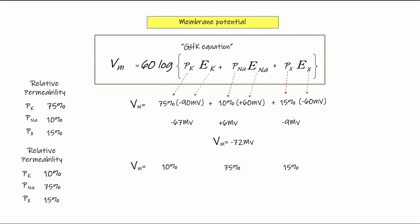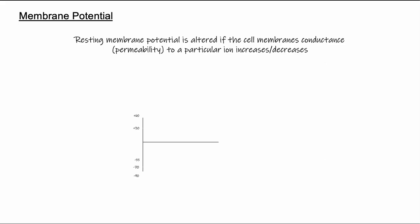Plugging in these new relative permeabilities — while the equilibrium potentials stay the same because ion concentrations haven't changed — we now get a membrane potential of positive 27 millivolts. By changing the relative permeability of the membrane, as the Goldman-Hodgkin-Katz equation shows, we've dramatically changed the membrane potential of that cell. We'll sometimes see the term conductance used when describing changing the membrane's permeability to a particular ion.